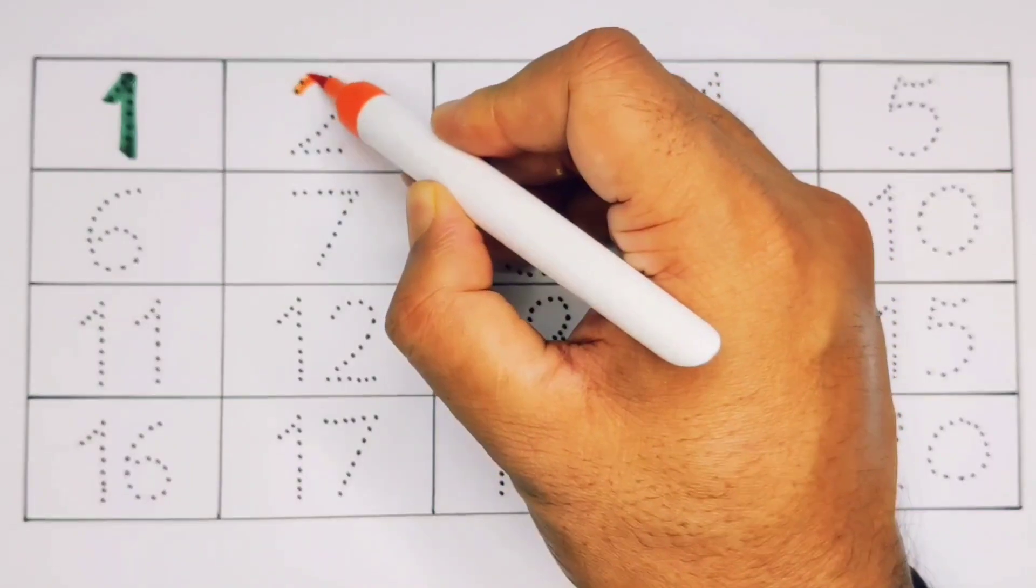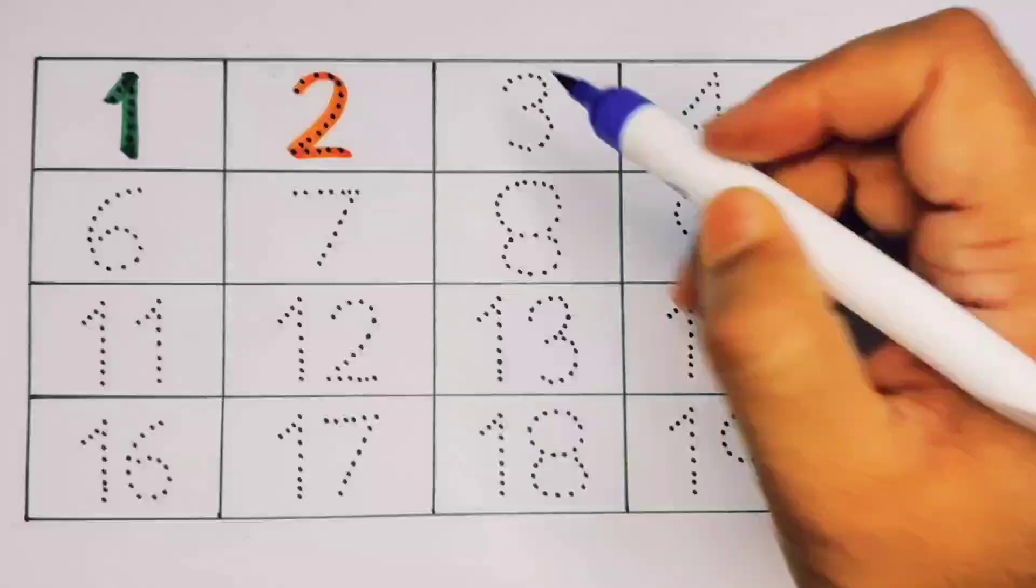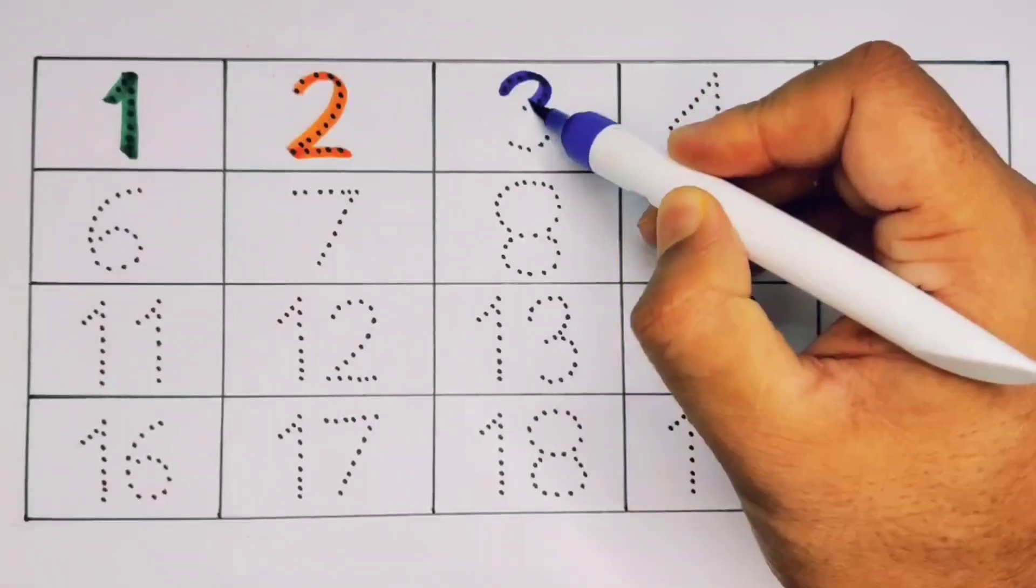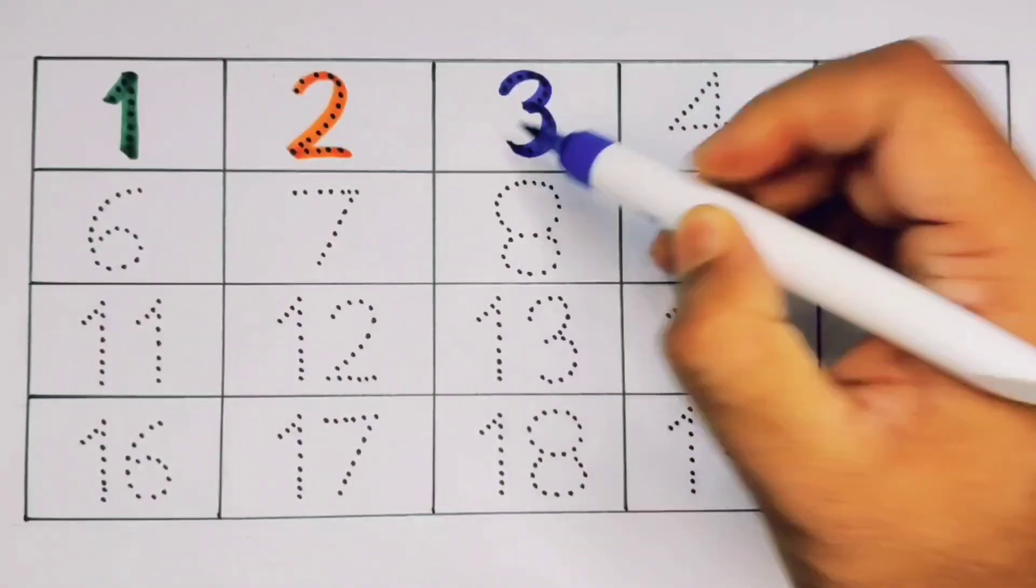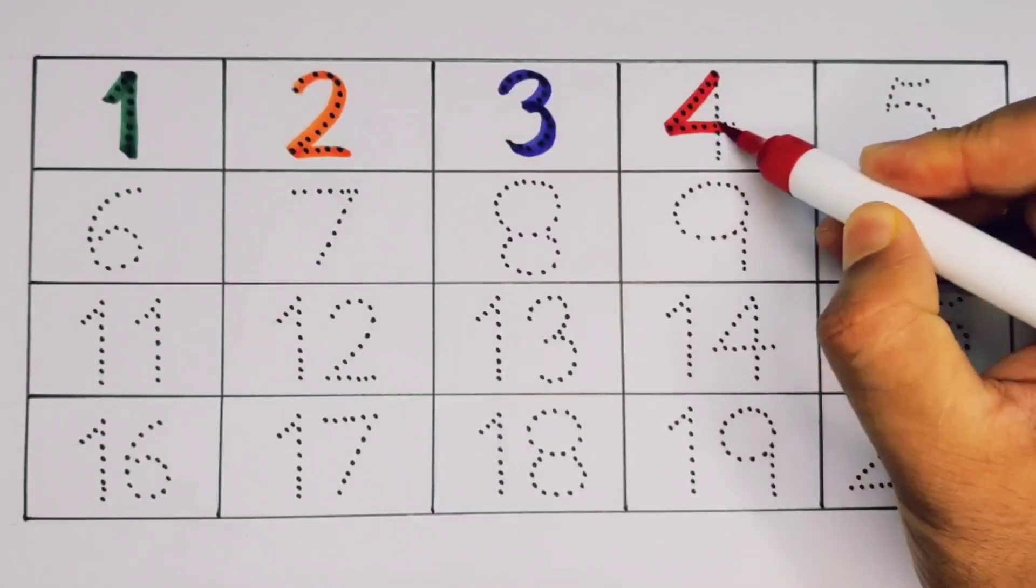Two, number two. What will next kids? It's three, number three. Next, it's four, number four.